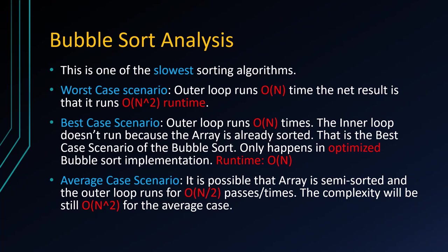Best case scenario. In the best case scenario, the outer loop runs n times but the inner loop does not run because the array is already sorted. This only happens in case of optimization. Optimization of bubble sort is done by using a flag or boolean value that checks if a swap happened during the execution of the outer loop. If no swap happens within the inner loop, the outer loop stops running. This best case scenario can only be achieved by optimizing the bubble sort algorithm.